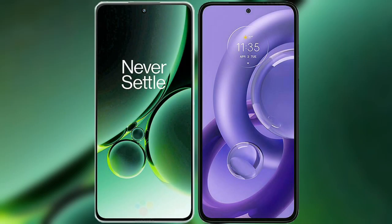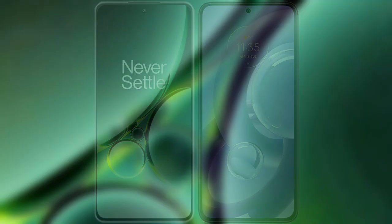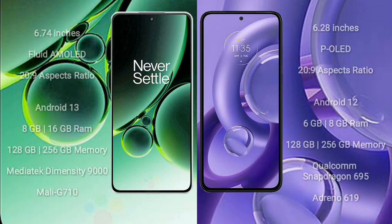I will compare the new OnePlus Nord 3 with the Motorola S30 Neo. OnePlus Nord 3 comes with a 6.74 inches flat AMOLED display and aspect ratio 20:9. Motorola S30 Neo comes with a 6.28 inches OLED display and aspect ratio 20:9.